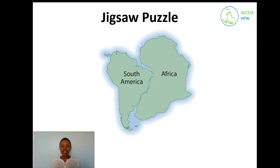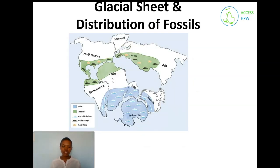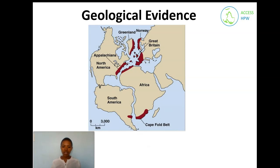What evidence shows that continents indeed drifted? Alfred Wegener provided the puzzle fit — South America and Africa fit like a jigsaw puzzle. He also provided evidence of glacial sheets found on India, Australia, Antarctica, Africa, and South America, showing they were once together. Additionally, the same fossils are found on different continents, and geological evidence such as the same rock types or rock belts found across different continents.